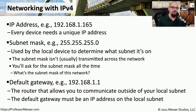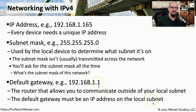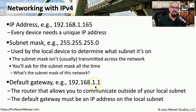The third configuration setting we need to put into our computer is the default gateway address. In this example, the default gateway is 192.168.1.1. This is an IP address on the same local subnet as your IP address, because this is where you'll send all traffic that needs to go outside of your local subnet. If you ask someone for the local gateway, they'll provide you with the default gateway IP address, which is another device on your local IP subnet. You will also very commonly configure a DNS server, or domain name system server.